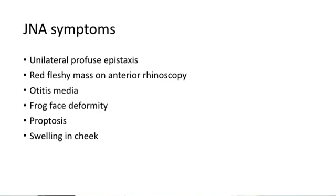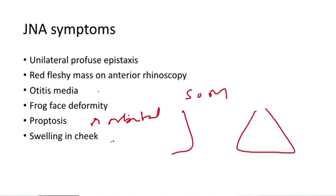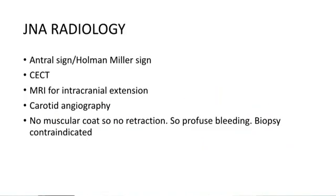The symptoms of juvenile nasopharyngeal angiofibroma include: a red fleshy mass visible on anterior rhinoscopy, profuse epistaxis from one side of the nose, and otitis media because it compresses the Eustachian tube causing secretory otitis media. It also causes nasal flattening, proptosis when it extends into the orbit through the orbital fissure, and swelling in the cheek when it enters the infratemporal fossa. The combination of all these features, along with broadening of the nose, produces the frog face deformity.